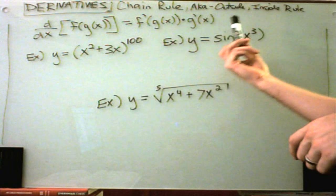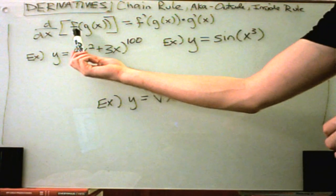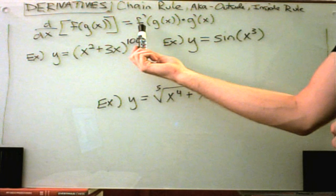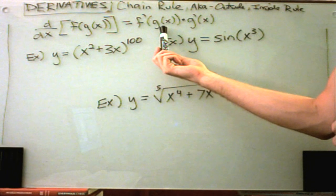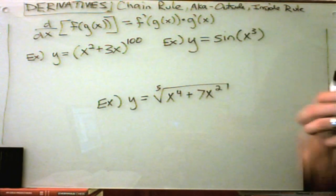If you think about it in terms of this outside-inside rule, it says you take the derivative of the outside thing, evaluate that at the inside thing, and multiply that by the derivative of the inside thing.